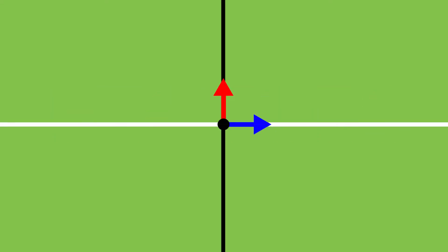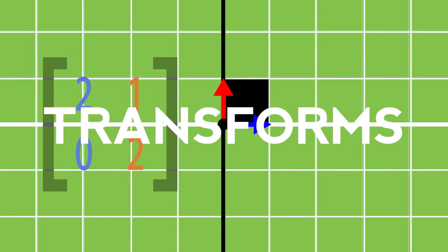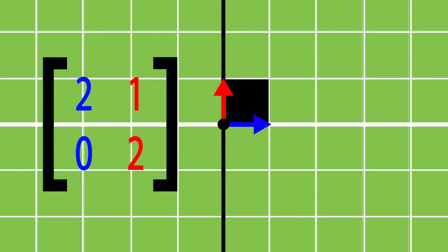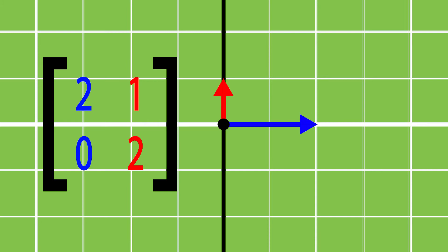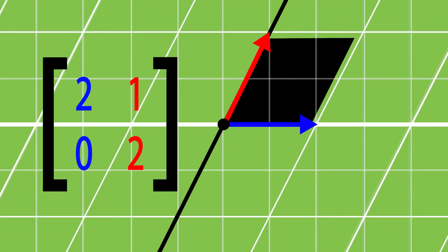But what even are matrices? In space, we have vectors. These vectors make boxes. If we put a bunch of boxes together, we make a grid. A matrix transforms these boxes by telling us what vectors to use. This matrix says use the vectors two-zero, so we'll move my blue vector to the point two-zero, and one-two, so we'll move the other one to the point one-two.